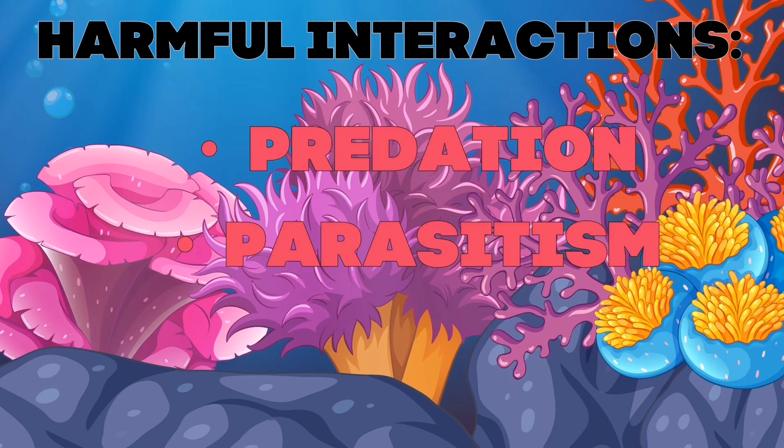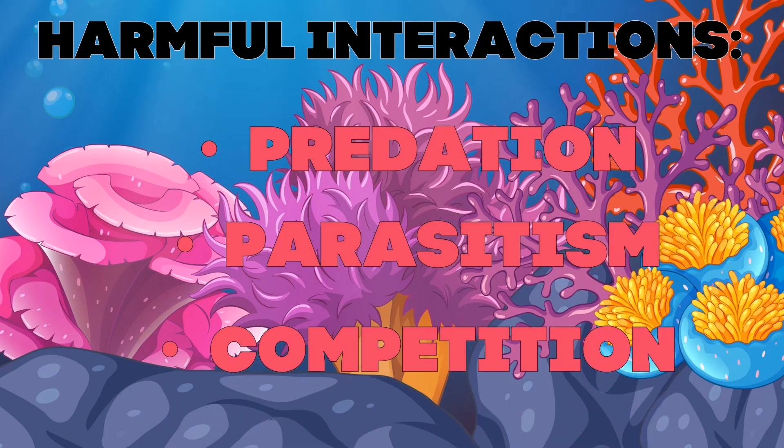Some parasites do slight harm to their host, and others can kill their host. And lastly, competition — this is the type of interaction where organisms compete for food, sunshine, space, shelter, water, and other things they need to survive. Each organism in this kind of relationship is a competitor.